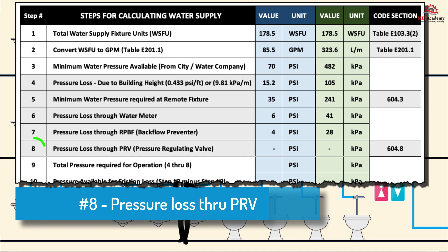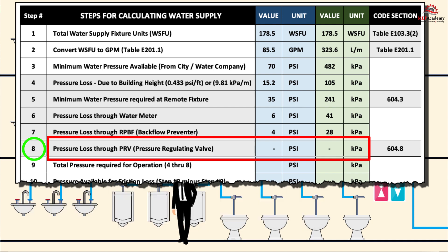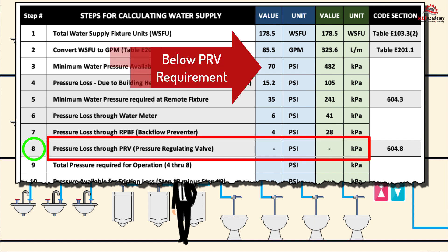Step 8: Pressure Loss Through Pressure Regulating Valve. The IPC requires a pressure regulating valve (PRV) when supply pressure exceeds 80 PSI (552 kPa), to reduce water hammer, limit excessive loss from pressure relief valves, and protect equipment and fixtures. Since the maximum water supply pressure in our example is less than 80 PSI, there is no need for a PRV.